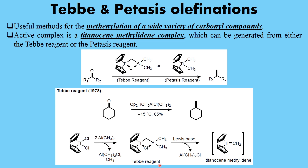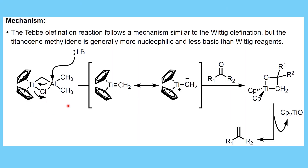When titanocene dichloride is treated with trimethylaluminium, it forms Takai reagent. When this Takai reagent is reacted with a Lewis base, the Lewis base attacks the aluminium, the bond shifts, leading to formation of the titanocene methylidene complex. This involves elimination of dimethylaluminium chloride, giving titanocene methylidene.